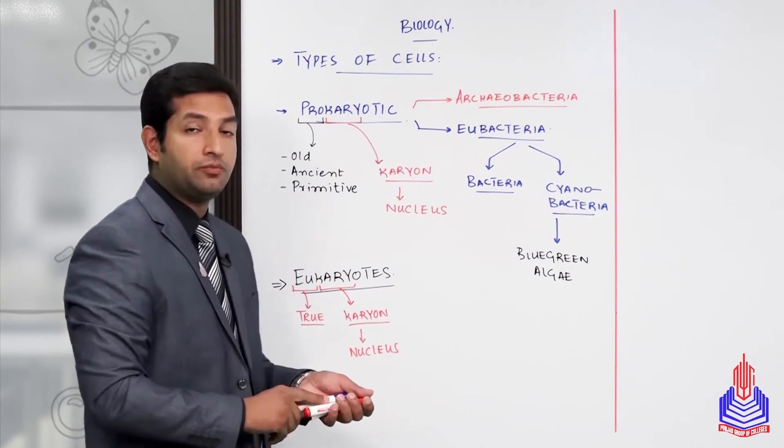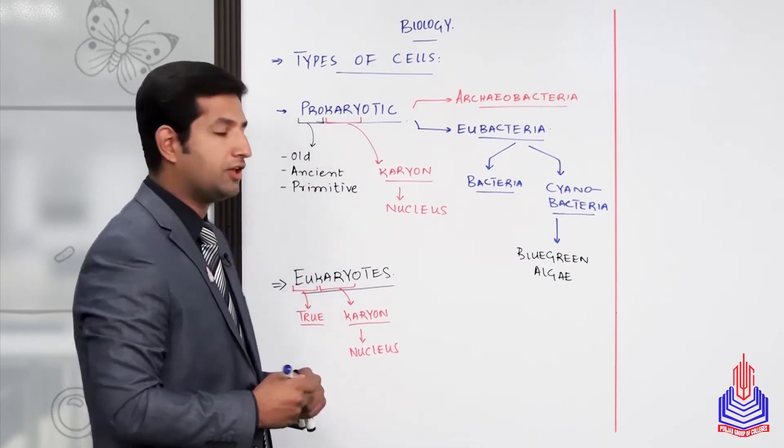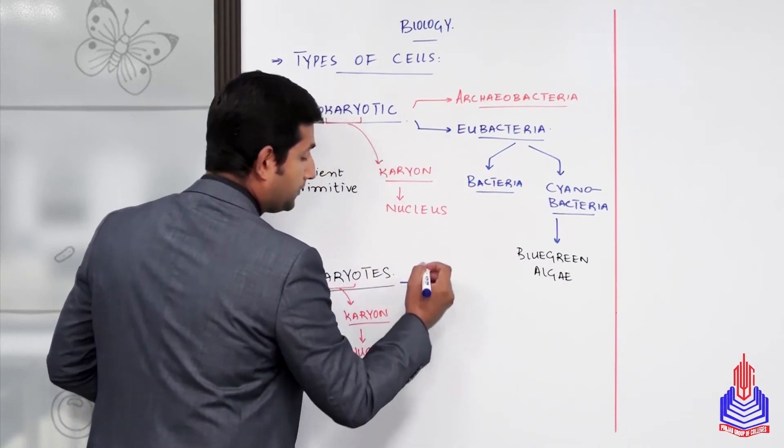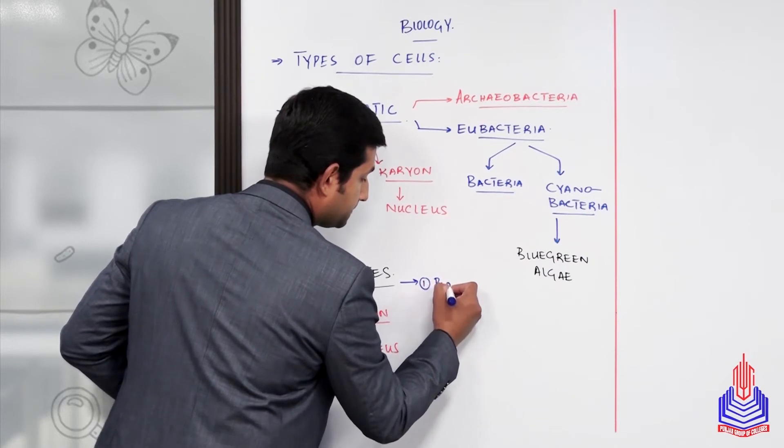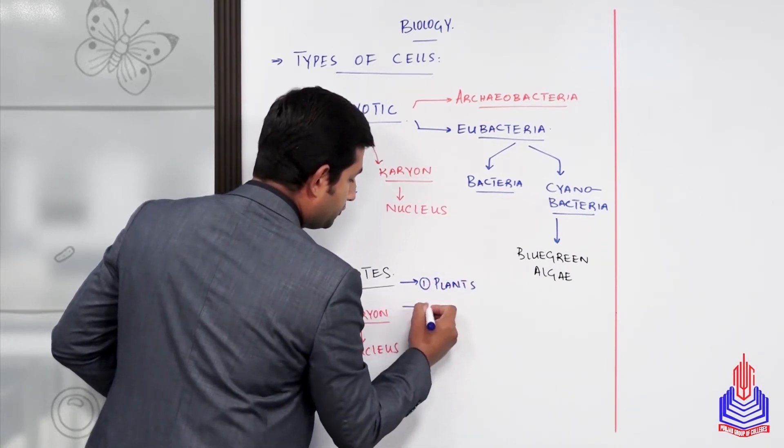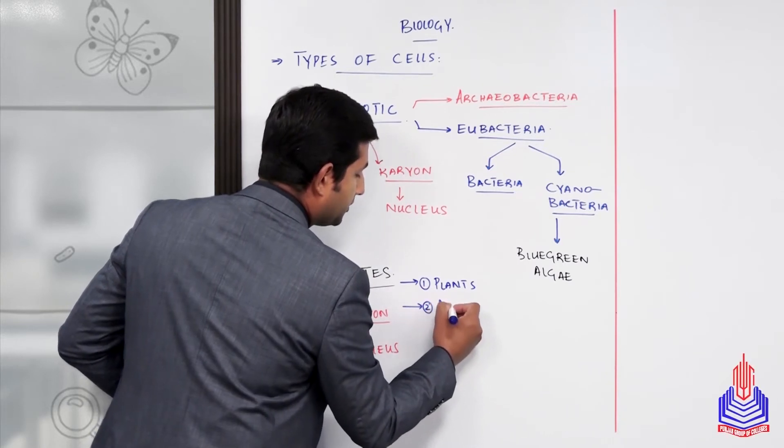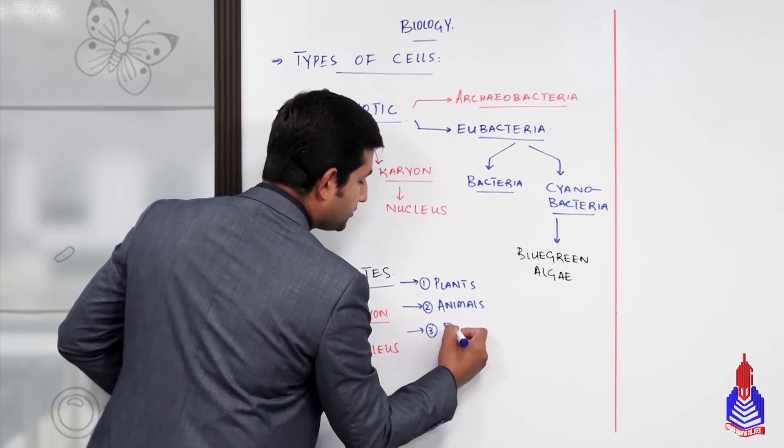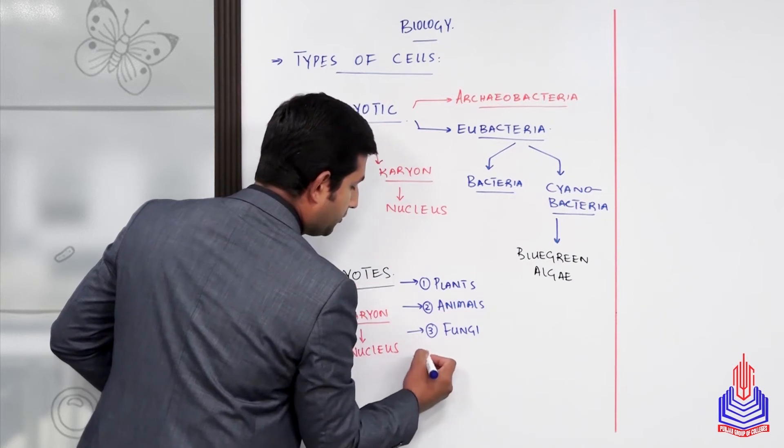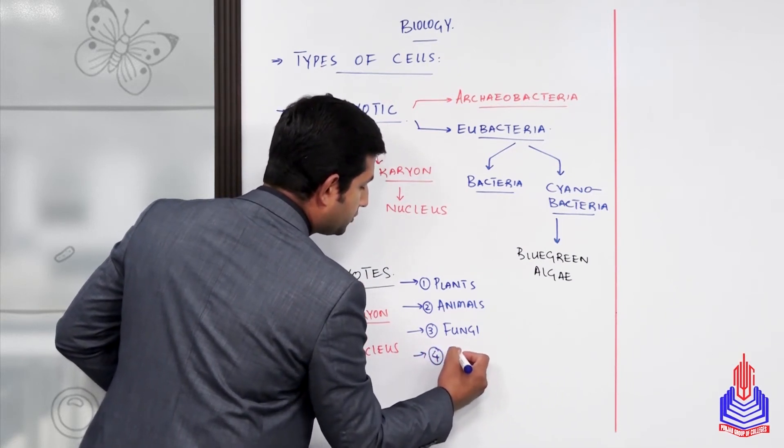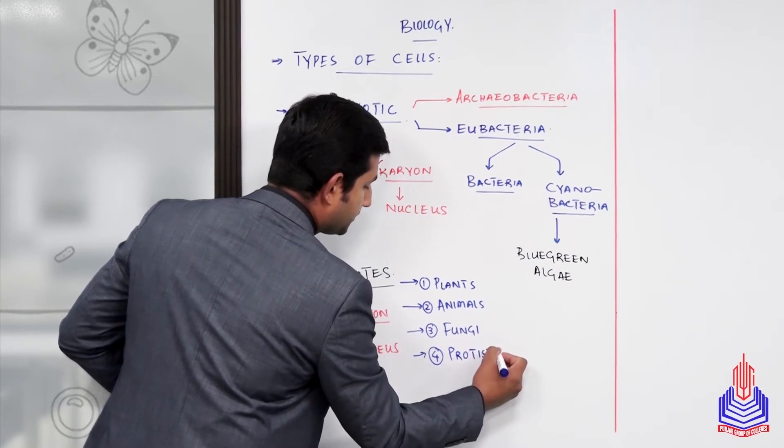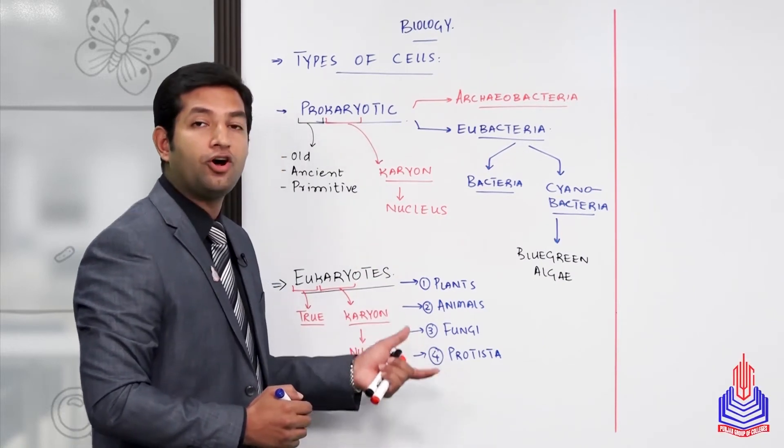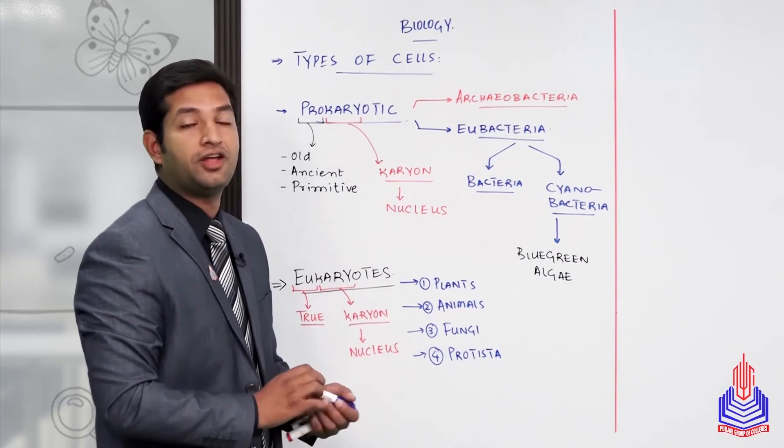What type of living organisms can be included in the eukaryotes? The groups included are: number one, plants; number two, animals; number three, fungi; and number four, protista or protoctista. These groups of living organisms all have a well-defined true nucleus in their cytoplasms.